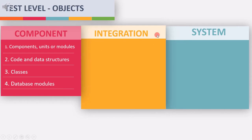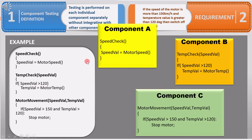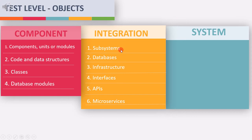Now let's move to integration testing. There are six test objects under integration testing. The first one is subsystem. We know that if three components are part of software, then for integration testing we need a minimum of two components. That is why subsystem is a test object of integration testing.